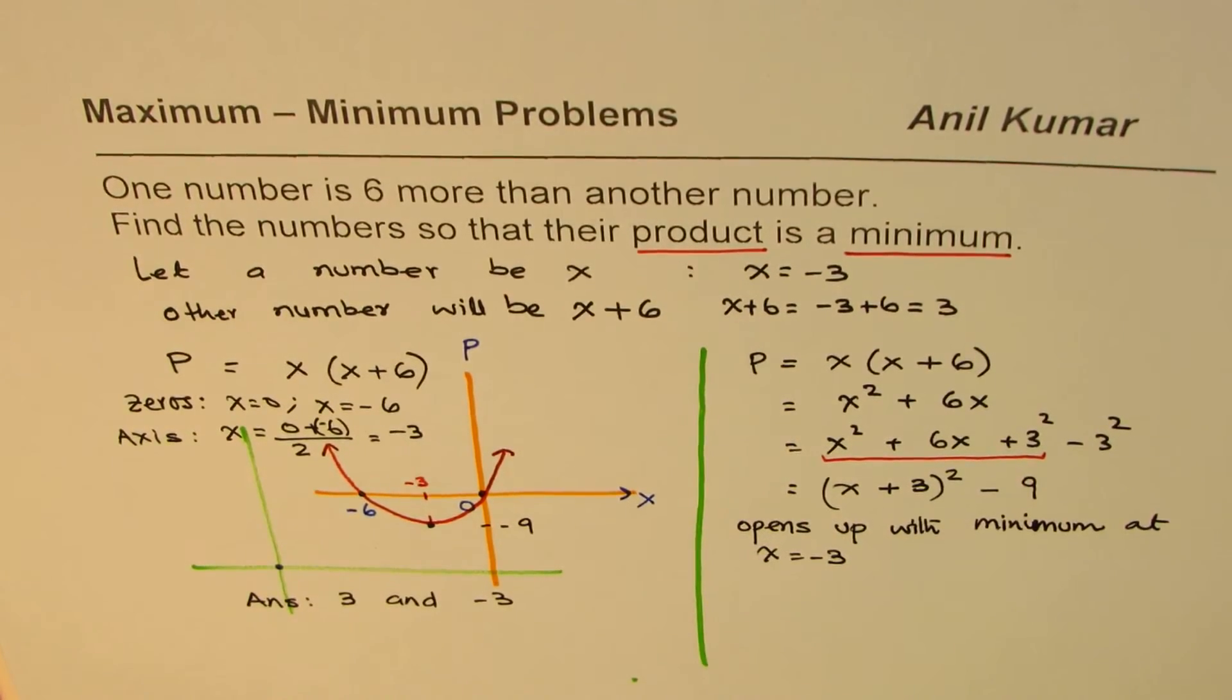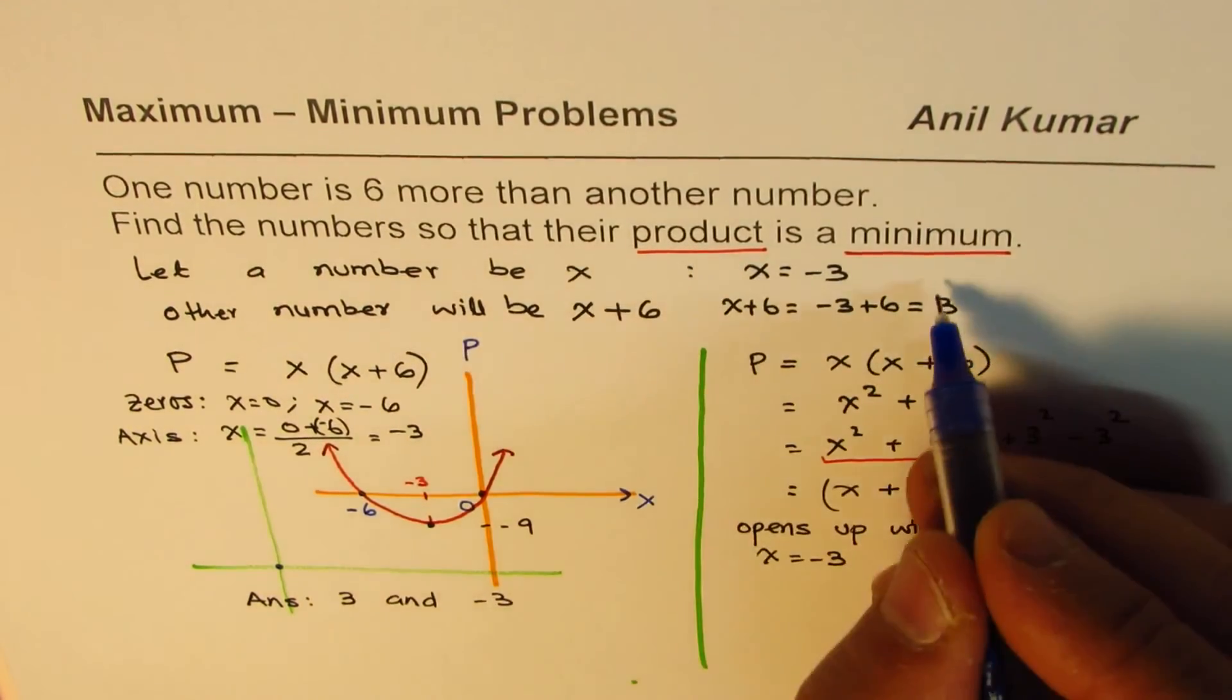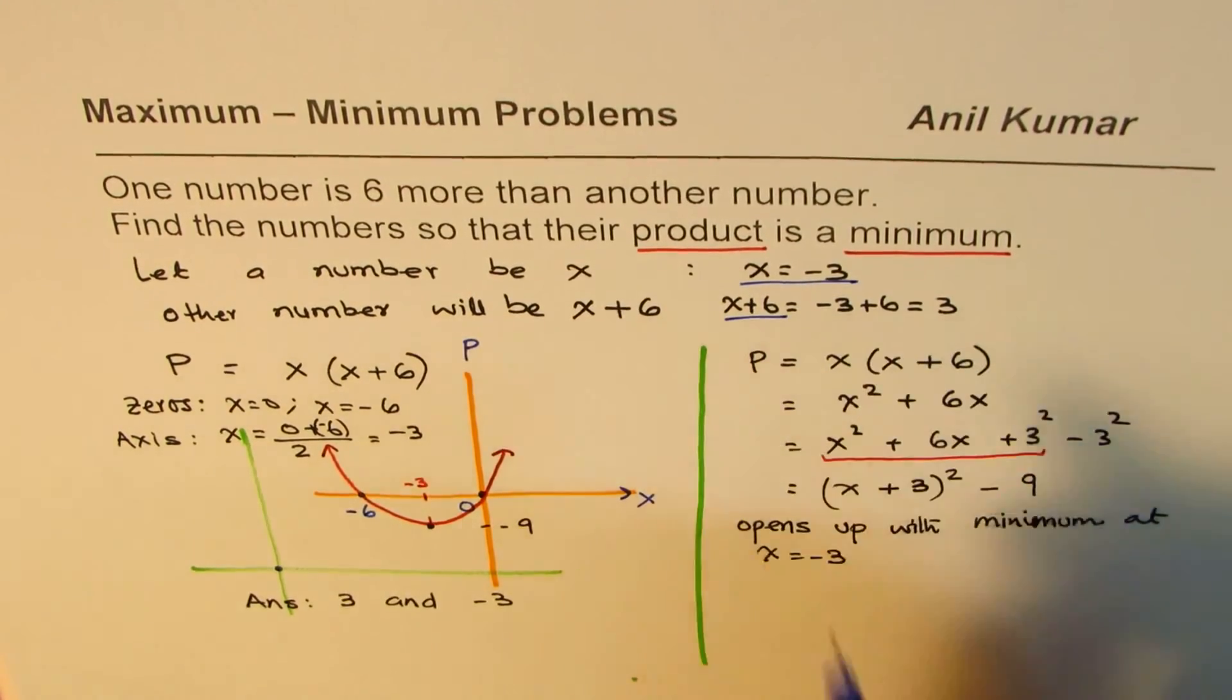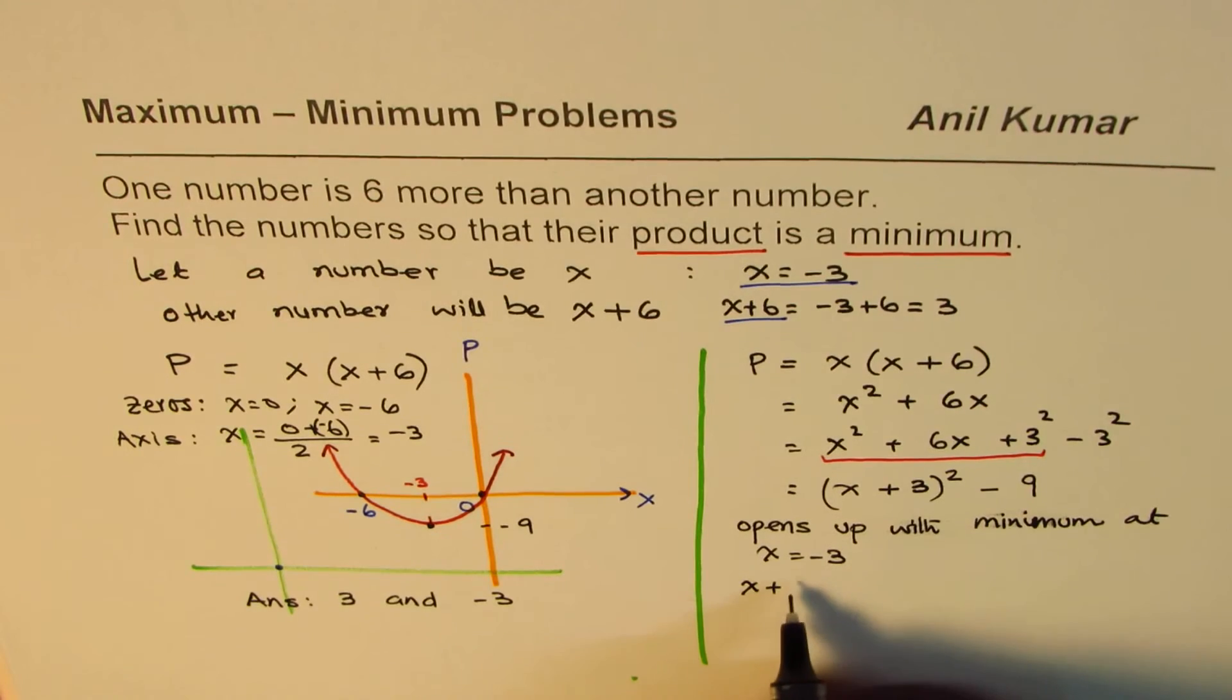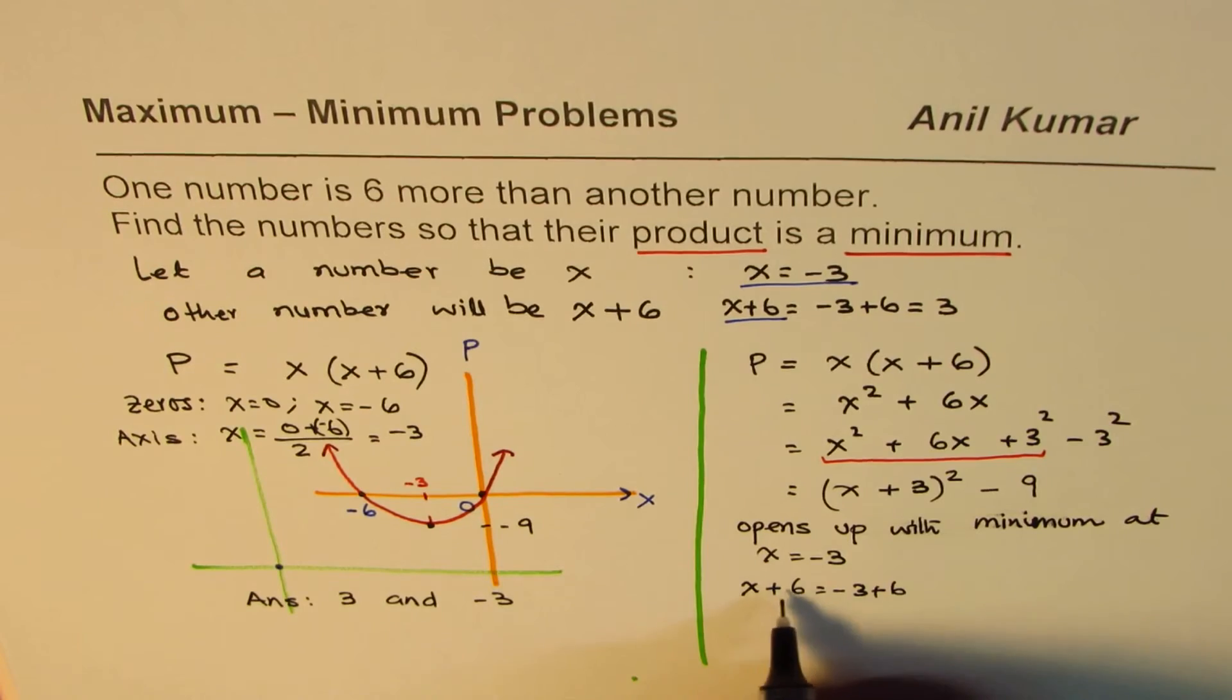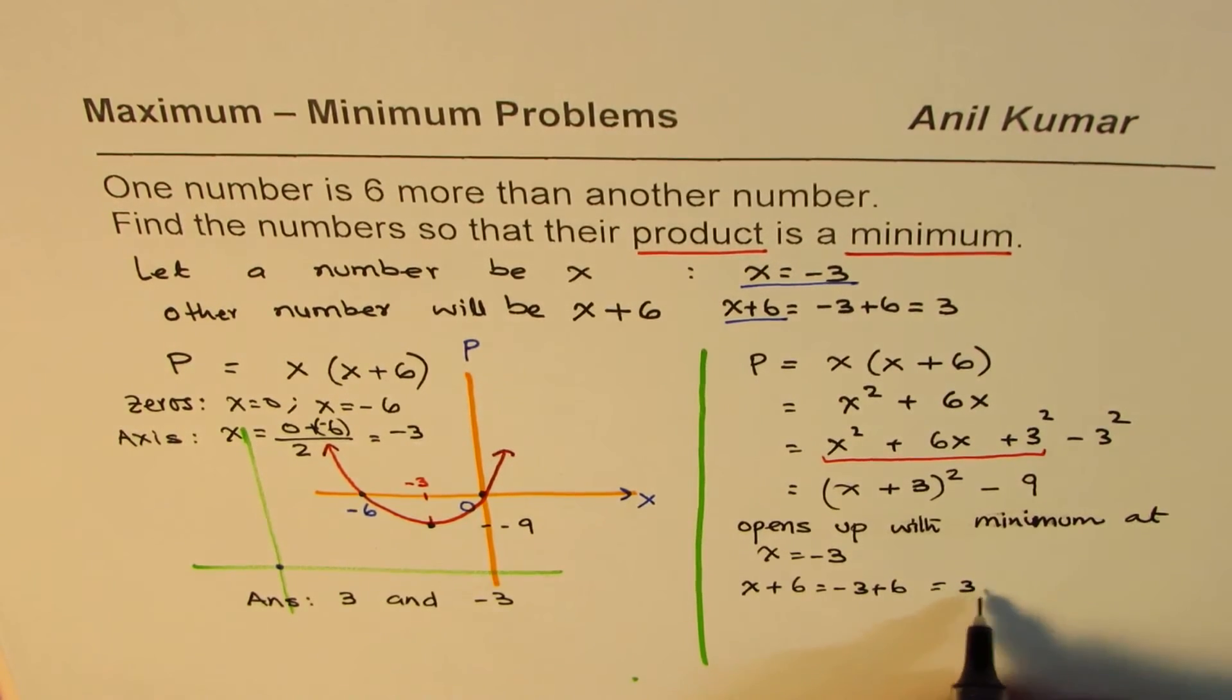So once we have X equals to minus three, we can find the second number. So if X is minus three, X plus six will be minus three plus six, which is three. Right? So we get our answer as plus and minus three are the two numbers.